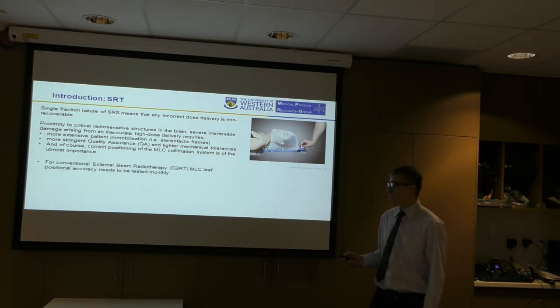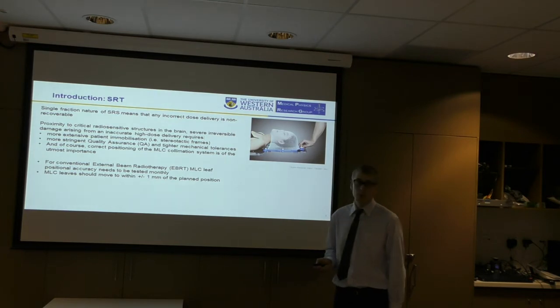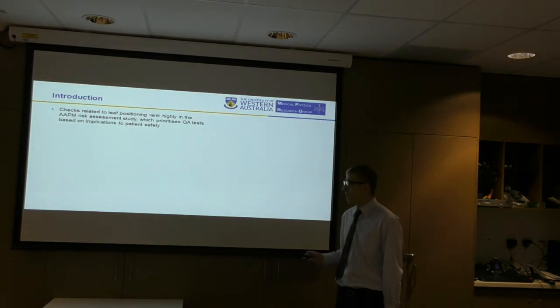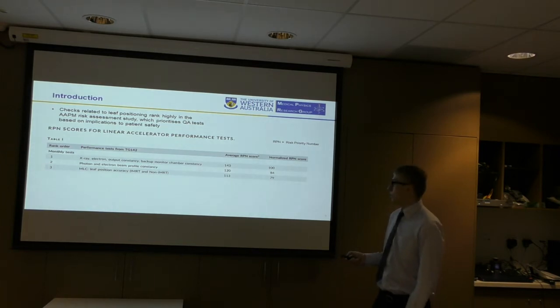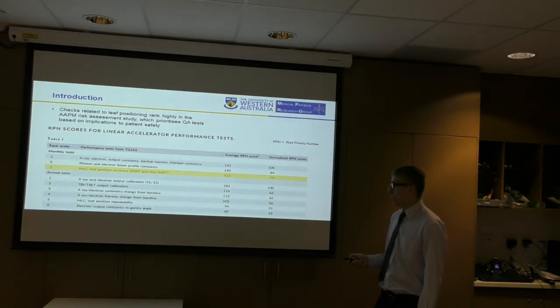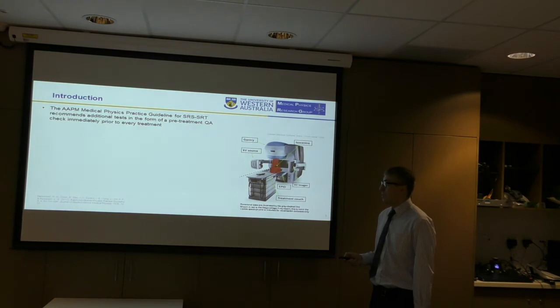For conventional external beam radiotherapy, MLC leaf positioning accuracy needs to be tested monthly. MLC leaves should move to within plus or minus one millimeter of the prescribed position. Checks related to leaf positioning rank highly in the AAPM risk assessment, which prioritizes QA tests based on implications to patient safety. From the study, you can see that MLC leaf positioning accuracy comes in at number three on the monthly tests, and on the annual tests, MLC leaf positioning repeatability also scores highly. The AAPM medical physics practice guidelines for stereotactic radiosurgery and stereotactic radiotherapy recommends additional tests in the form of a pretreatment quality assurance check immediately prior to every treatment.